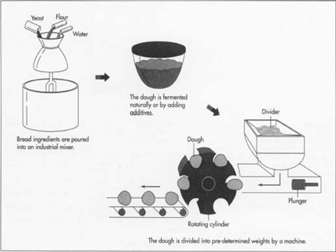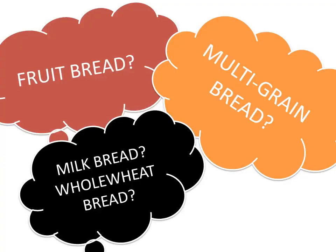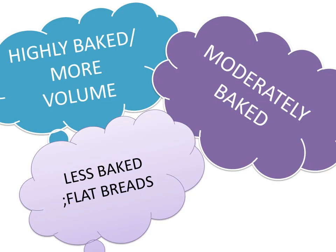We have hundreds of varieties of breads based on the ingredients used, like multigrain, fruit bread, milk bread, etc. Then based on the baking pattern: some breads are highly baked and have huge volume, some are of moderate volume, and the rest are baked to be just flat breads. This way we can have scores of varieties in bread itself. But in this video, we will be discussing only the varieties we commonly see around us.